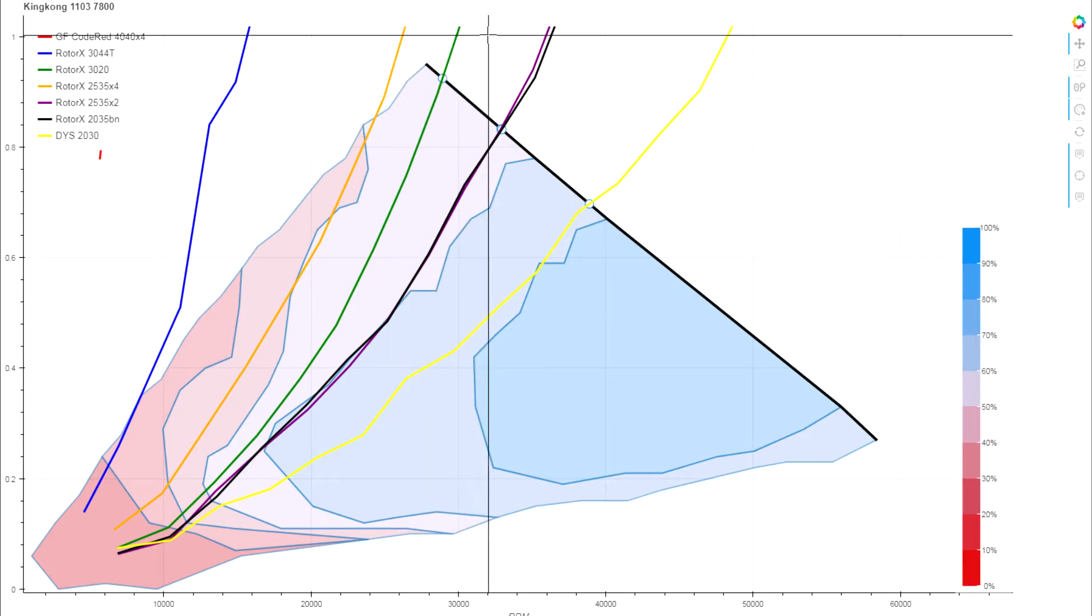This green trace is the Rotorx 3020. And then over here on the high end where we're used to seeing the 4-inch prop, this is actually the 3044, and the 4-inch is way up here down at torque loads that would be near a stall. So losing that extra size on the stator here has significantly cut into the total power that we're able to get out of it.